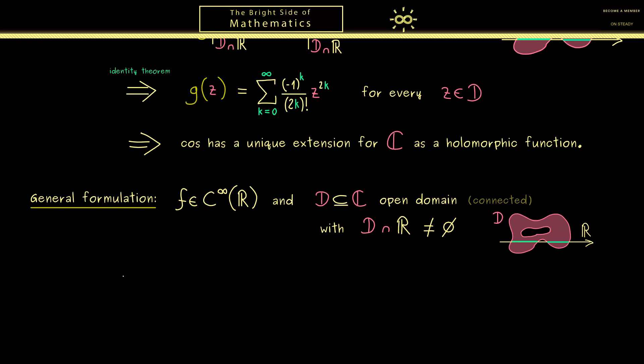Now we can write down the same conclusion as before for the cosine function. More precisely, there is at most one holomorphic function, we can call g again. G should be defined on the open domain D, with the property that g restricted to the intersection is the same as f restricted to the intersection. If you find a holomorphic extension of the function f for the domain D, you know it's the only one, it's unique.